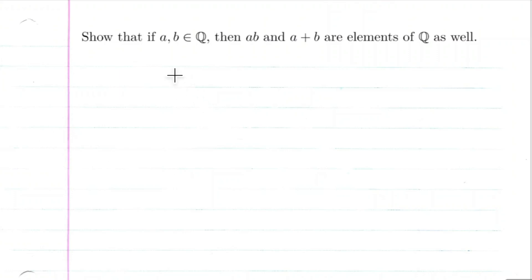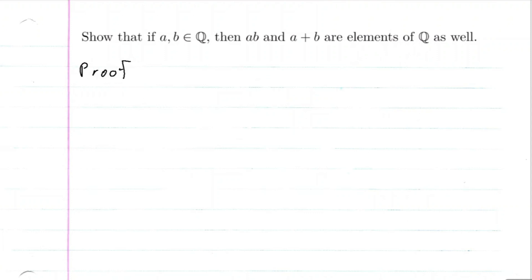We want to show that if A and B are rational numbers, then their product and their sum are rational numbers as well. So let's go ahead and start the proof. We're going to assume that A and B are rational numbers.